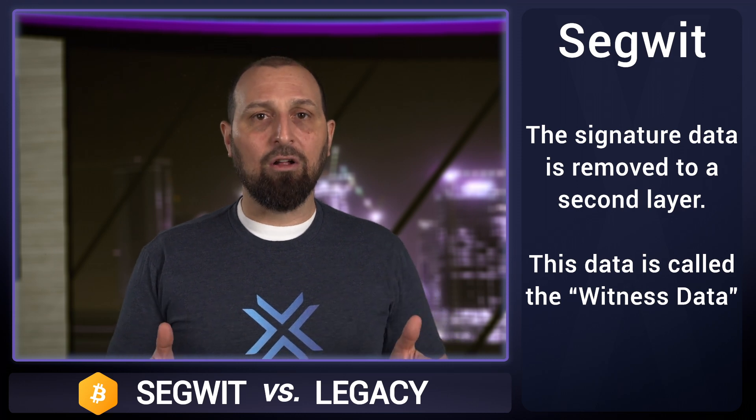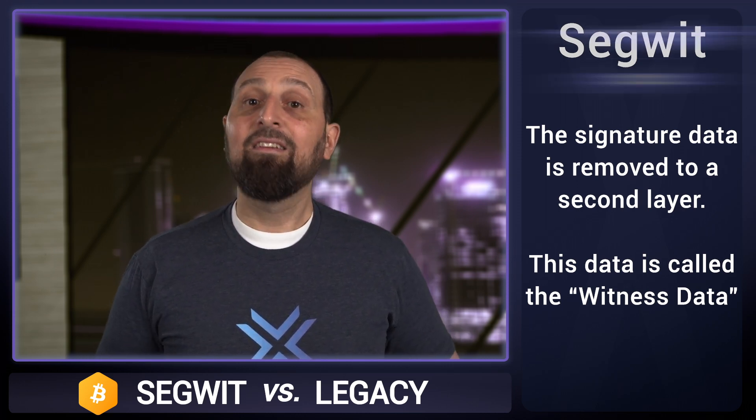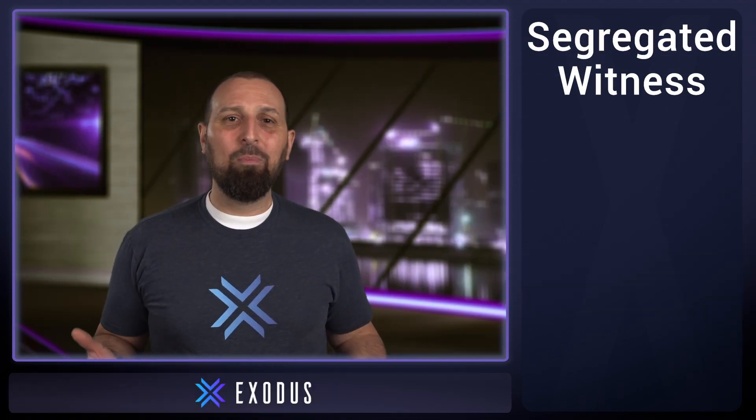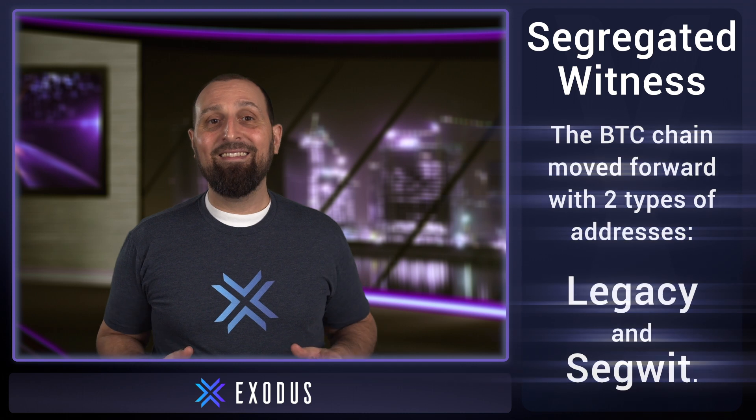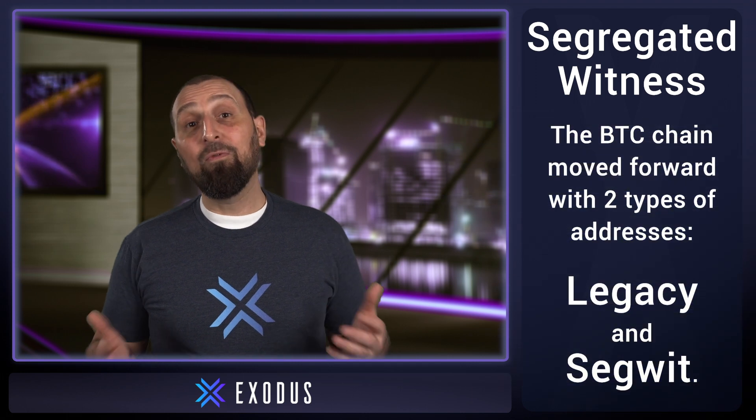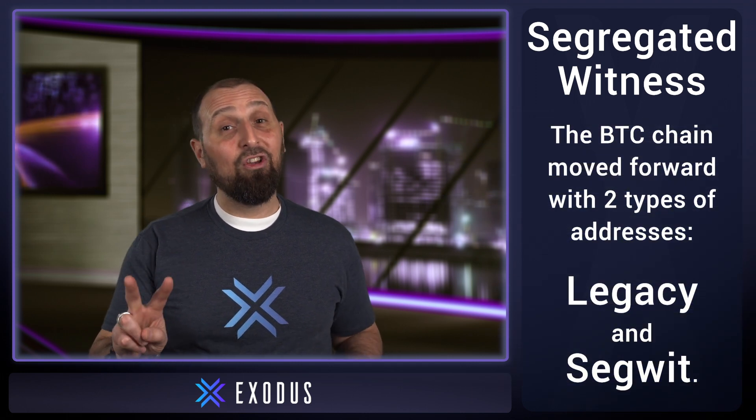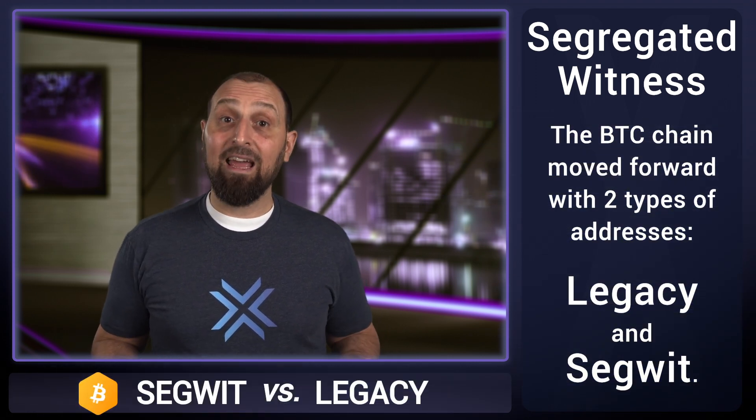This portion of the transaction is called the witness data, and technically known as segregated witness. Without driving into the divisive politics of the time, the BTC chain moved forward with two types of addresses: legacy and SegWit.